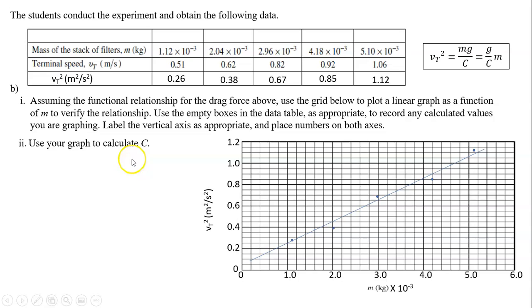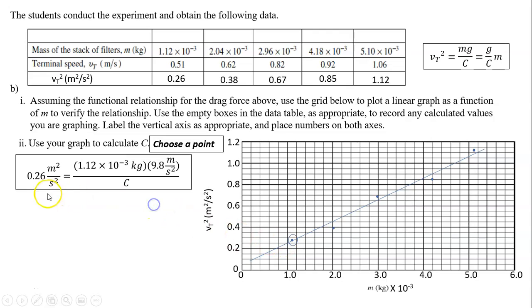Next part is use your graph to calculate c. How do we calculate c using this graph? One way is just to pick a point on the line. Choose a point, but that point has to be on the line. So I've chosen this point because this is a data point. I know exactly where it is. That's the first point, and it's on my graph. So you plug everything in there. In this case, vt squared is 0.26.